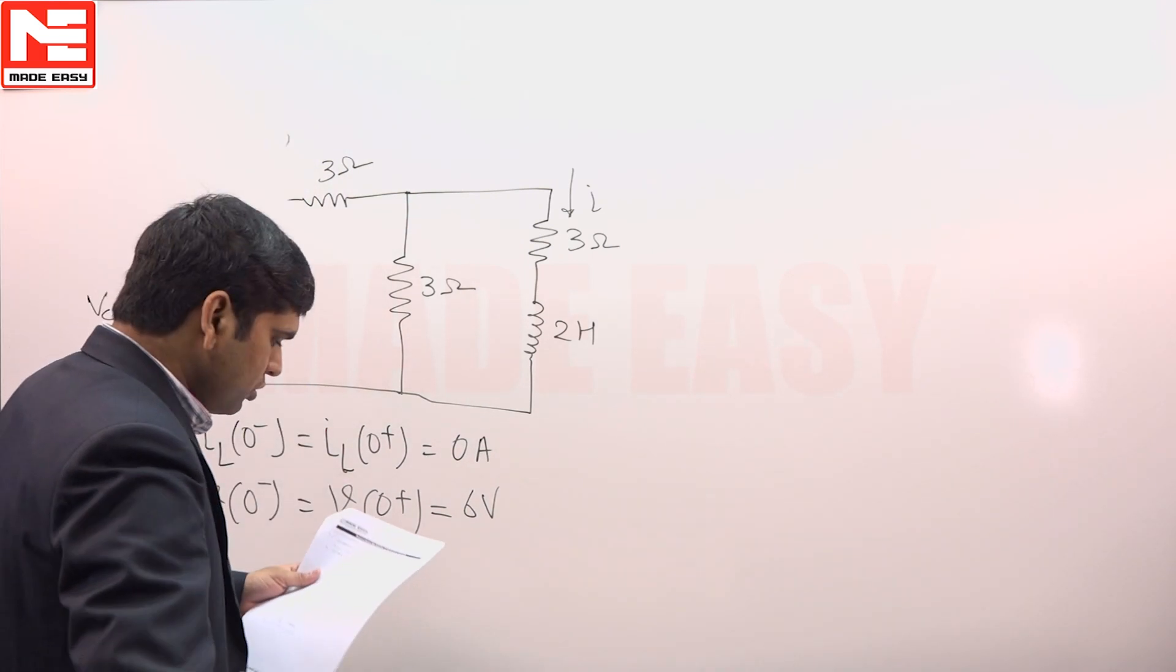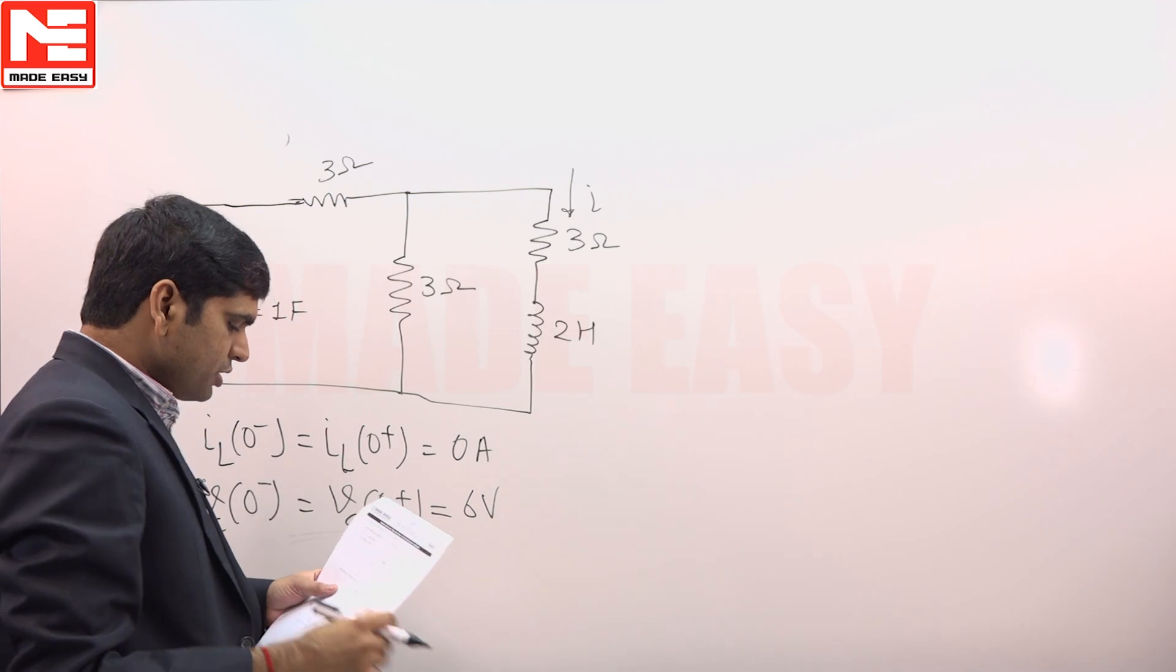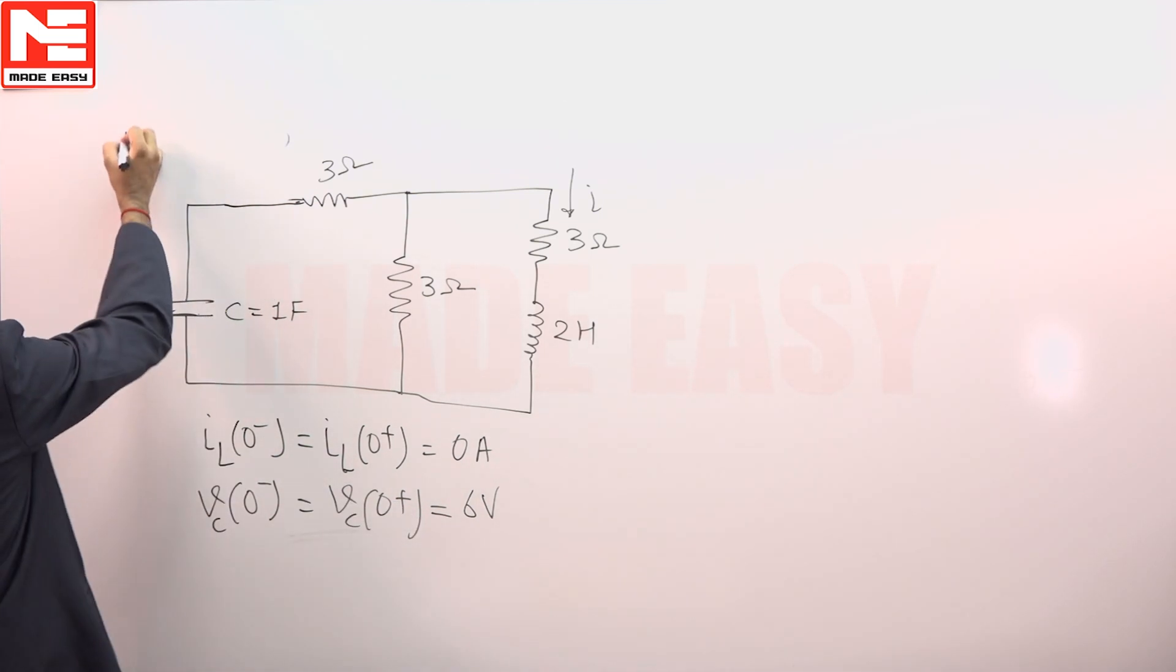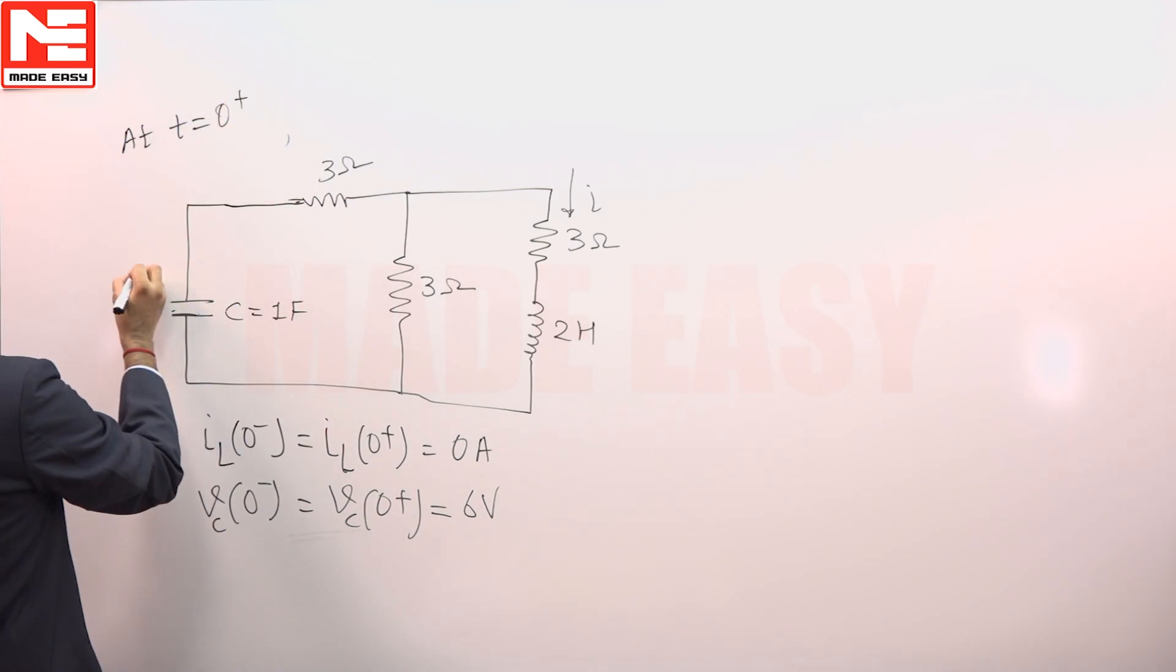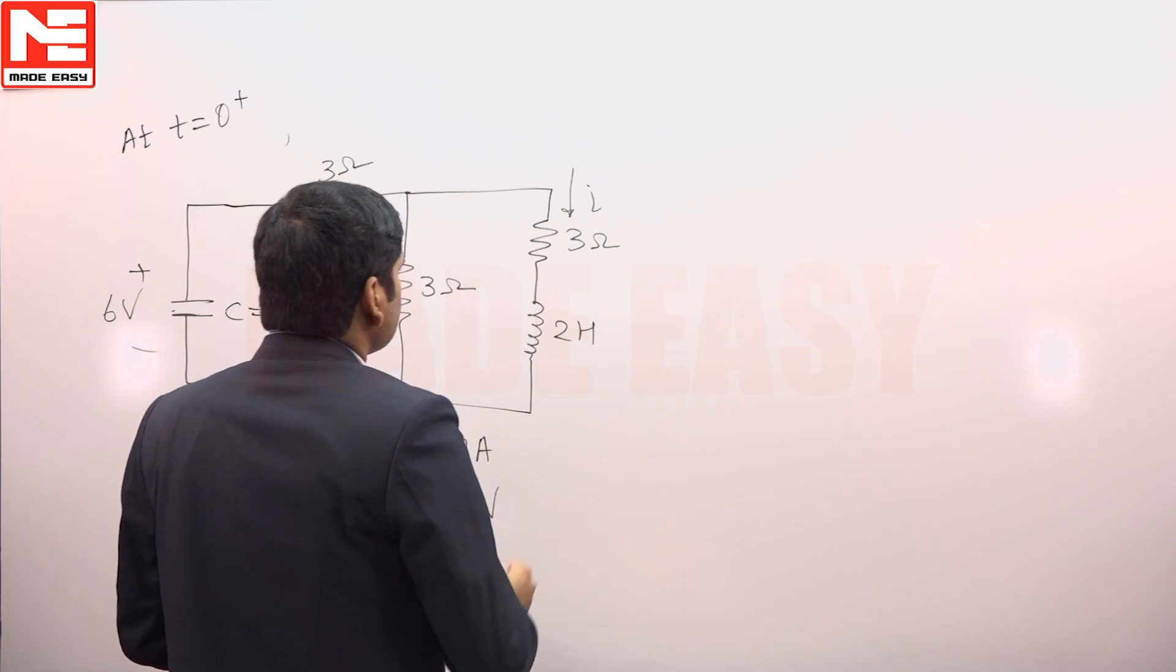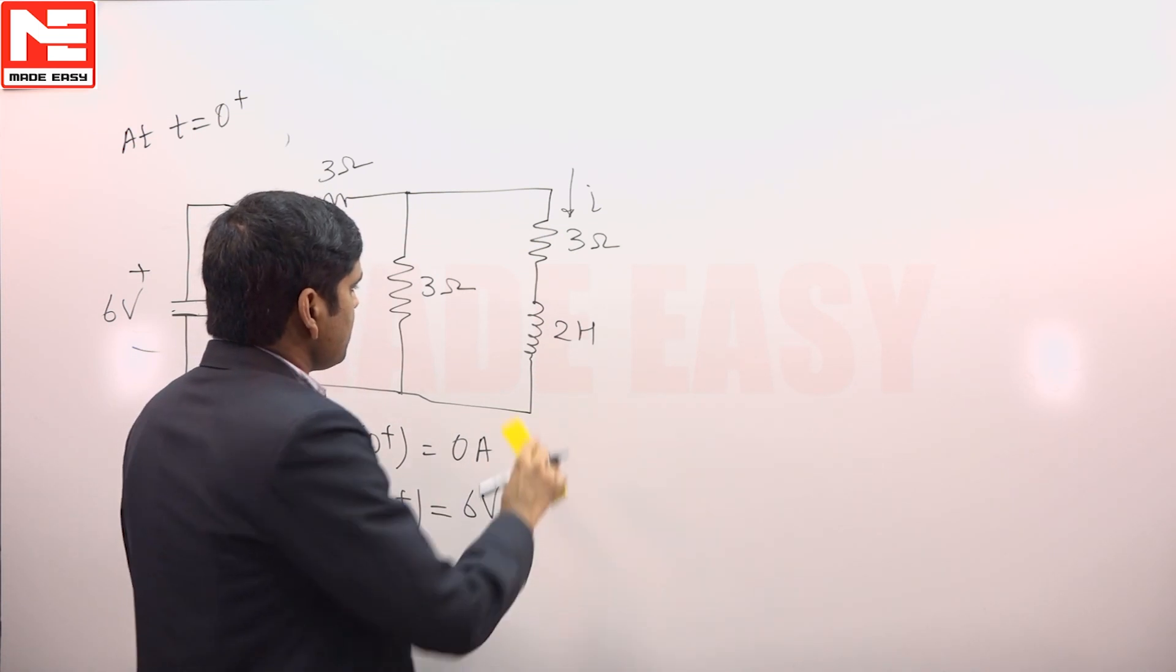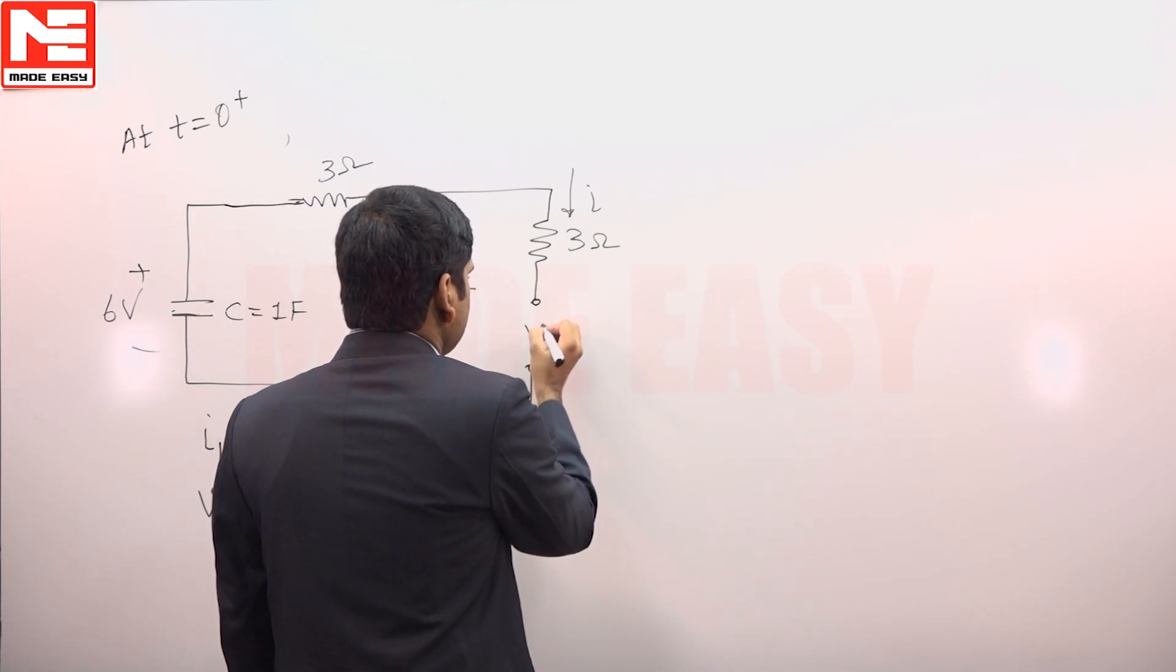This switch is closed at 0. In this moment, this will retain at t equals 0+, we will have this voltage as 6 volts and the current flowing across this branch is 0, means this inductor is behaving like open circuit, then only the current can be 0.